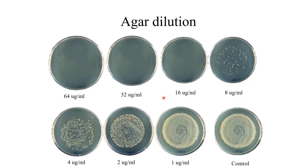After incubation we get results like this. You can see these three plates do not have any growth, and growth is starting from the fourth plate, which is 8 micrograms per milliliter. Growth continues to increase in subsequent plates, and the control plate also shows sufficient growth.